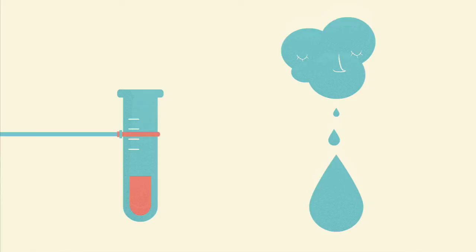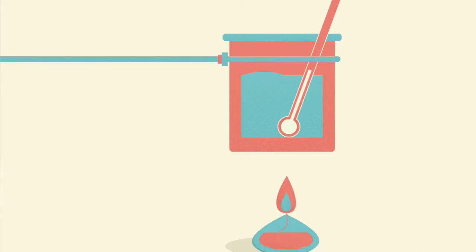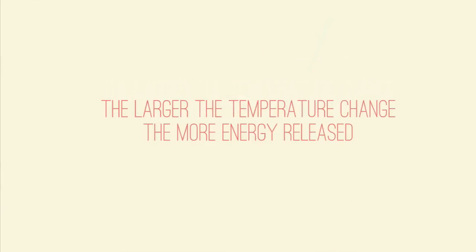In summary, calorimeters are devices that can measure the heat of chemical reactions, physical changes or heat capacities for different materials. A simple experiment showed how measuring the temperature change of water could be used for this purpose. The larger the temperature change per gram of fuel, the more energy released.